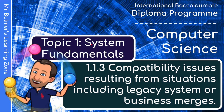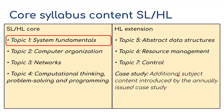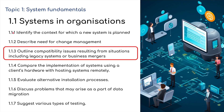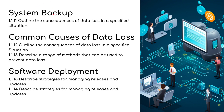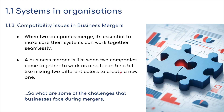Hello and welcome back to the third video for topic 1 System Fundamentals for the IB Diploma in Computer Science. We're looking at 1.1.3: compatibility issues resulting from situations including legacy systems or business mergers. Topic 1 System Fundamentals covers four topics at standard level, with three additional ones at higher level. We are currently on 1.1 Systems and Organizations, starting with 1.1.3.